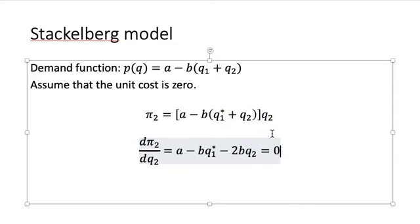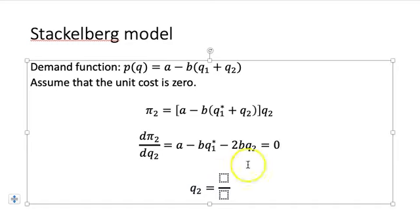Solving for Q2, it's going to be Q2 equals A minus BQ1 star over 2B. So basically you have the follower's reaction function - whatever firm one sets, the follower will just take that into consideration to help him set his profit maximizing output.